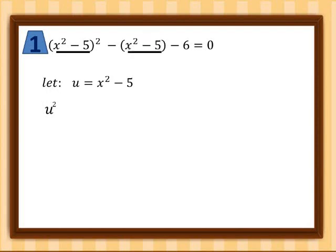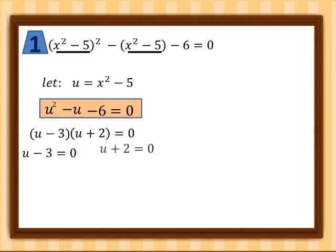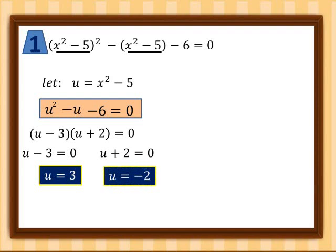So we have u squared minus u minus six equals zero. This is the equation written in standard form, and we are going to solve it using any method you are comfortable with. Here I will use the factoring method. The factors are (u - 3) and (u + 2) equals zero. Equating each factor to zero gives us u equals three and u equals negative two.